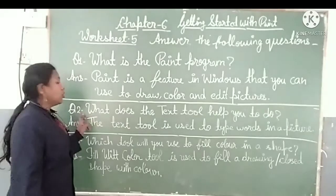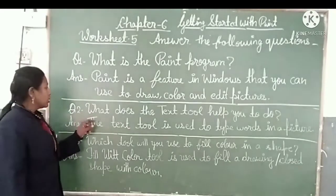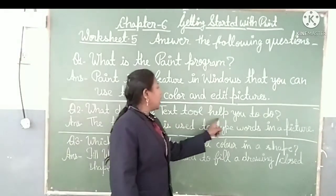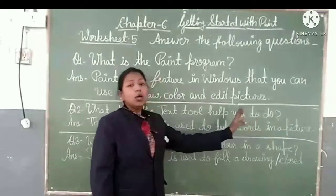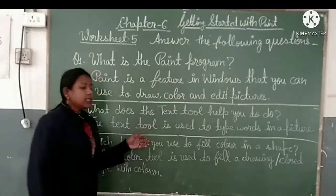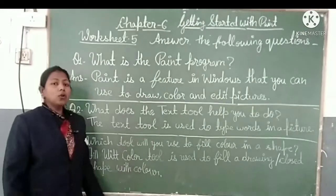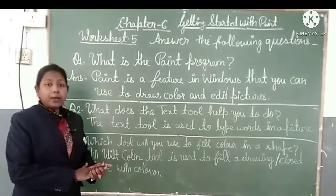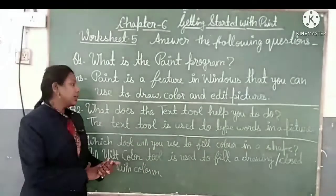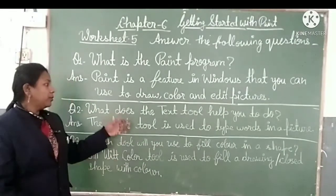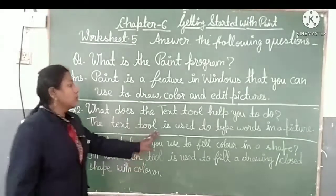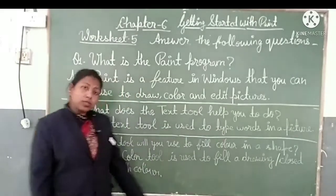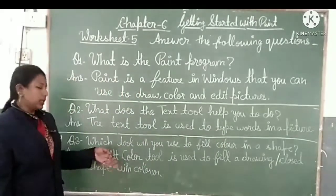Your second question is: What does the Text tool help you to do? The Text tool is used to type words into pictures. That is, if we have made a figure in Paint and we want to type any word in it, we use the Text tool for that.